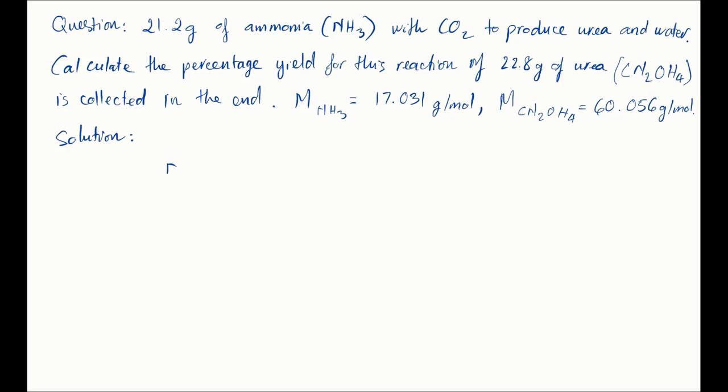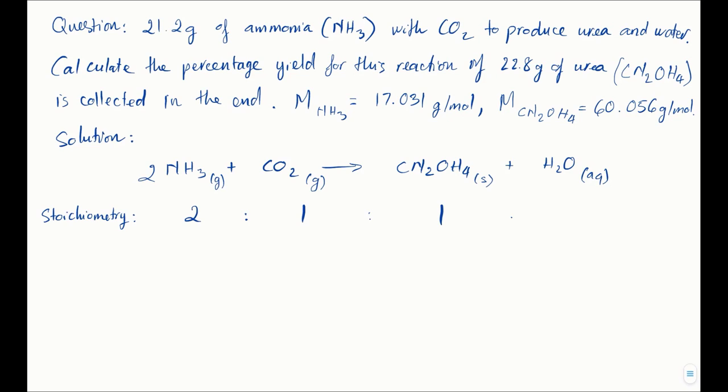So you have ammonia NH3 plus carbon dioxide CO2 producing urea CN2OH4 plus water H2O. If you balance that, the chemical equation will become 2NH3 plus CO2 and on this side you have CN2OH4 and H2O. So the stoichiometry in this equation is 2-1-1-1. That means you need two ammonia and one carbon dioxide to make every urea and water.